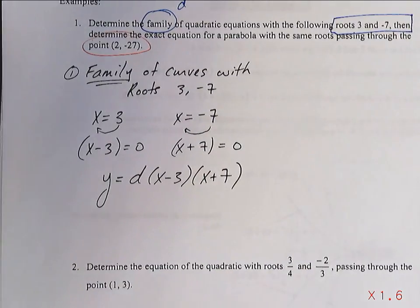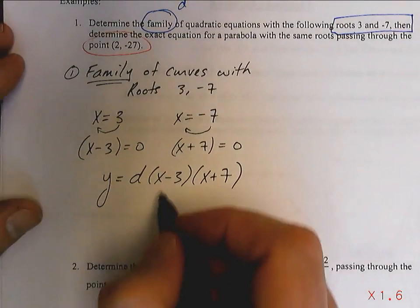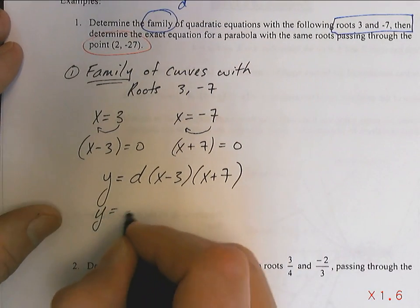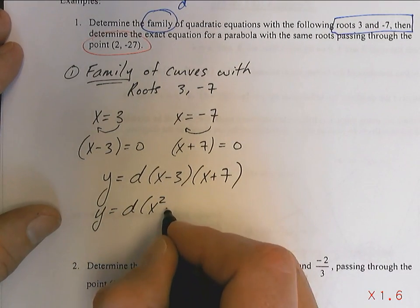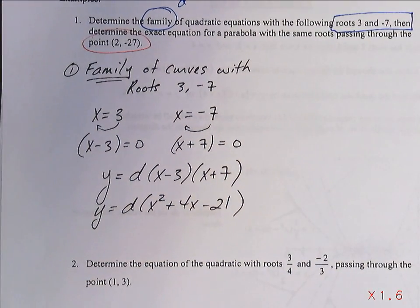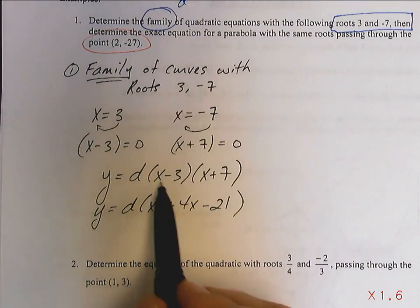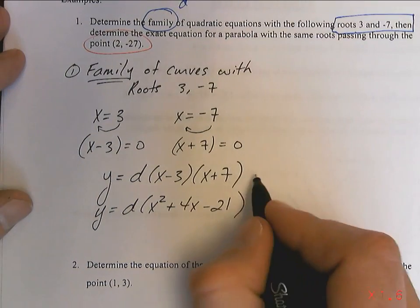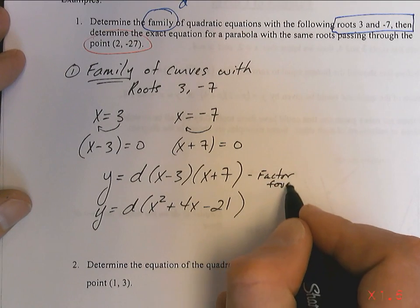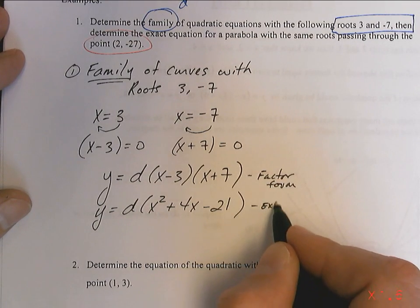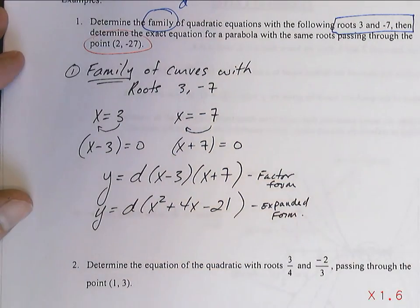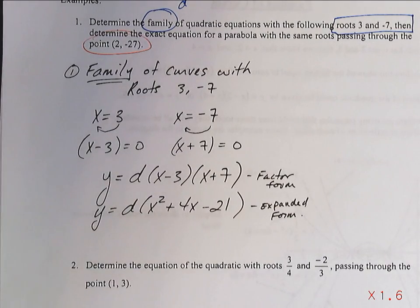So that means the family of curves will be y equals d times x minus 3 times x plus 7. It's beautiful. It's easy. There's the family. Now, we could also show it like this: y equals d times x squared plus 4x minus 21. That's a good family too. One's in expanded form. One's in factored form. The question will tell you which form to put into or you can choose.